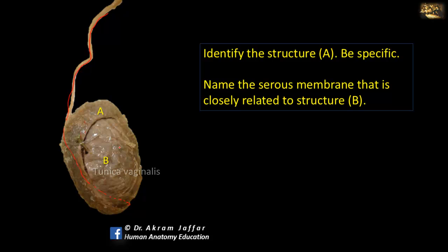The serous membrane closely related to the testis is the tunica vaginalis — the remains of the processus vaginalis, a peritoneal process pushed in front of the testis as it descends into the scrotum. The continuity between the processus vaginalis and the peritoneal cavity is then obliterated, leaving the tunica vaginalis as a serous membrane surrounding the testis containing serous fluid. Excess fluid results in hydrocele, and failure of obliteration predisposes to formation of a congenital or indirect inguinal hernia.